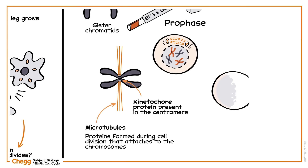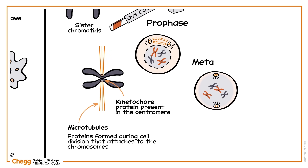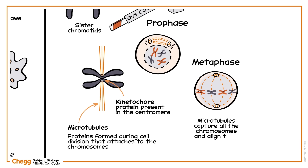Now the cell moves to the second stage, metaphase, where microtubules capture all the chromosomes and align them in the center of the cell at the metaphase plate. Two kinetochores of each chromosome attach to a microtubule, and the other end is attached to the aster, formed on the opposite spindle poles.